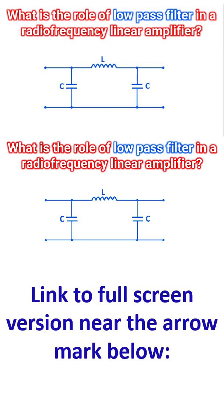In a radio frequency linear amplifier, the primary role of a low pass filter is to ensure that the signal being transmitted is clean by suppressing unwanted frequencies while allowing the desired signal to pass through unimpeded.